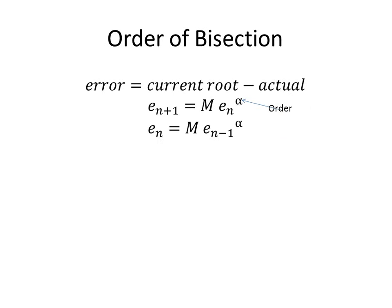But let's calculate the order of bisection. So the order, what it's really trying to tell you is how fast is it going to converge on our solution, how fast it's going to find our root. And we have a formula that we're going to use here. It says the next error after an iteration is some constant M times our previous error raised to alpha, which we're going to say is our order.